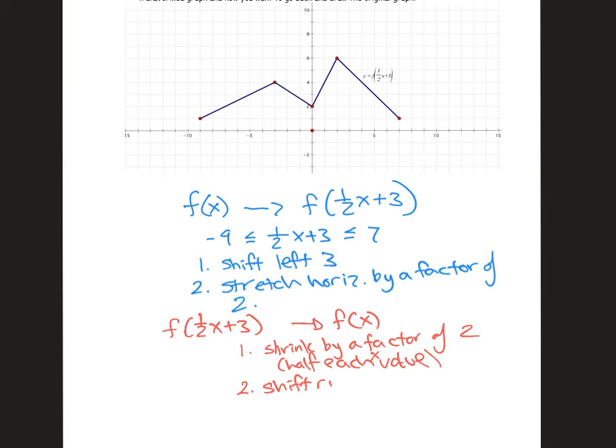Interestingly enough, notice what we're doing when we're going from the transformed back to the original: we're actually following the order of operations here. Normally with domain changes when we're starting with an original function and going to transformed we're doing the opposite of order of operations, but now to undo the opposite of order of operations I do the order of operations. It helps to think about okay to get this graph here's the steps I did, let me undo those steps.